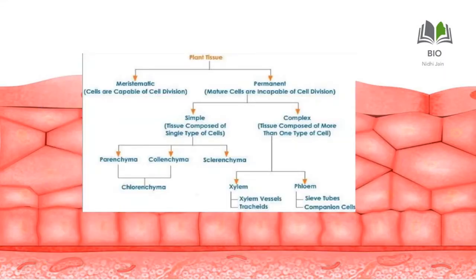Permanent tissue, which has lost the capacity to divide, is again divisible into two types: simple and complex. Simple permanent tissue is made up of one type of cell; complex permanent tissue is made up of more than one type of cell. Simple permanent tissue is of three kinds: parenchyma, collenchyma, and sclerenchyma. Complex tissue is of two kinds: xylem and phloem.